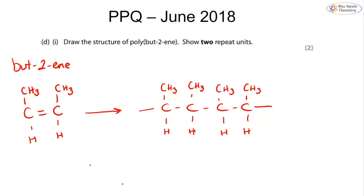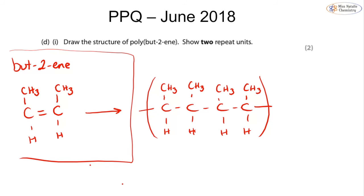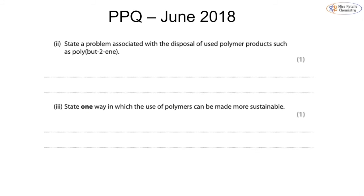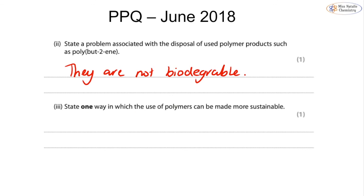I want to have my brackets on the outside. I don't need to put the letter n here because it's asking specifically for two repeat units and this isn't an equation - it's just looking for a structure. I've drawn the monomer step just for you to see how we go from monomer to polymer. For the next part of the question - a problem associated with the disposal of polymer products such as poly(but-2-ene): the main problem is that they are not biodegradable, that is the biggest issue. You can also say they take up space in landfills, or if incinerated they give off toxic fumes - any of those are acceptable, but the most common answer is non-biodegradable.